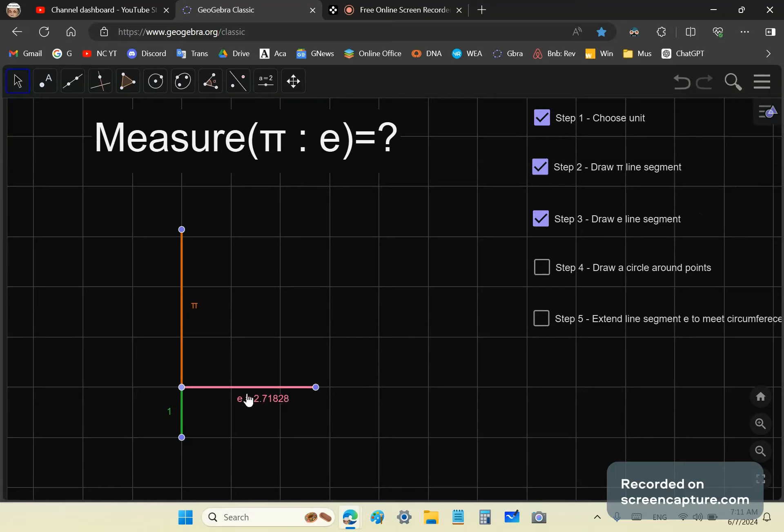Now what we want is to measure pi using this line segment. It's very easy. We draw a circle around these three points. And if we extend this point over to the circumference here, that will be the answer. That will be the quotient.